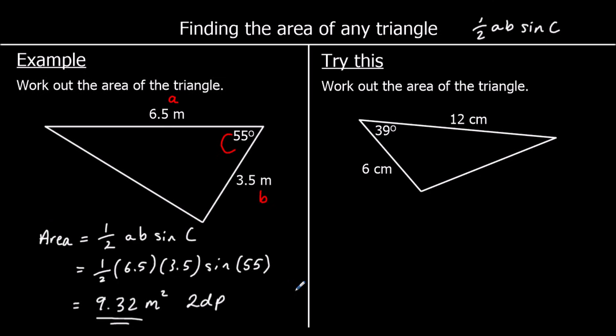There's a question for you to try — work out the area of the triangle. We can use half AB sin C if we know two lengths and the angle between them. That's what we've got here, so the angle is going to be big C.